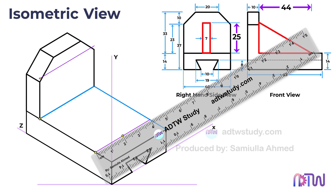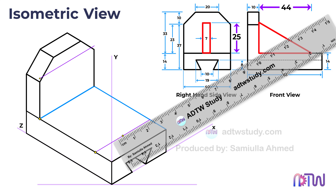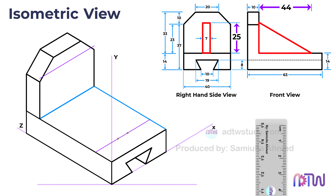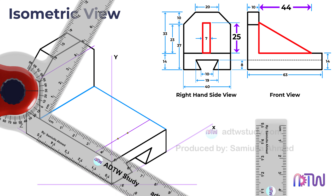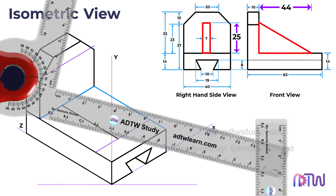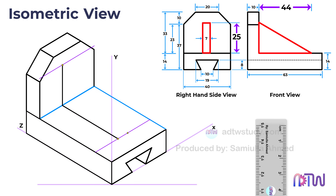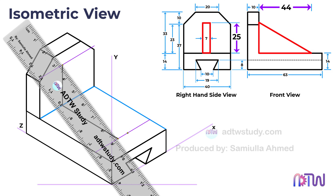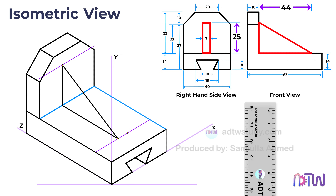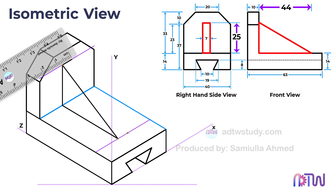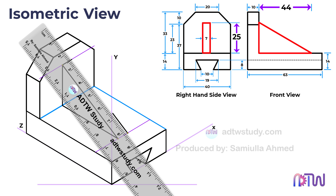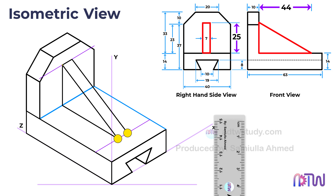Mark points 3.5 millimeters away on either side of this center point. These points indicate the thickness of the portion, which is 7 millimeters. After this, draw a 44 millimeters line parallel to the z-axis from one of the points, then draw a vertical line of 25 millimeters from the end of that line, and connect the two endpoints to complete the triangular shape. To give the triangular portion its thickness, draw a 7 millimeters line parallel to the x-axis from the same point. Next, draw a line parallel to the inclined line starting from the endpoint of the previous line, and finally connect these two points to complete the figure.